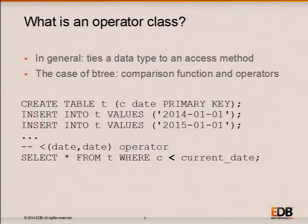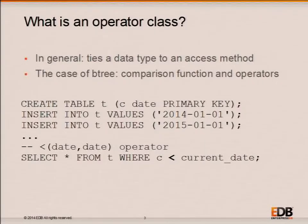Btree creates a data structure on disk that boils down to a method for maintaining a sorted list. It does so in a way that's relatively efficient in the face of concurrent modifications and updates to that list. The data type-specific information required by Btree is a comparison function — a function that takes two arguments of the data type and returns an indication of whether the first argument is less than, equal to, or greater than the second.